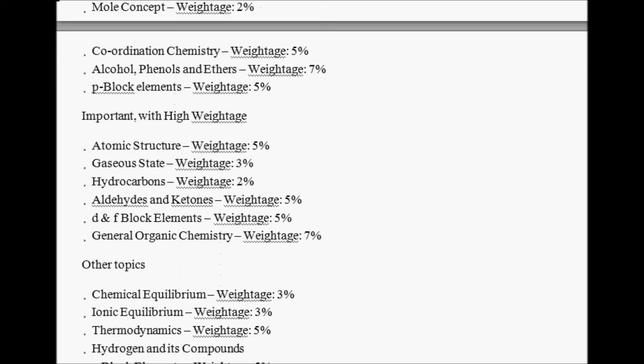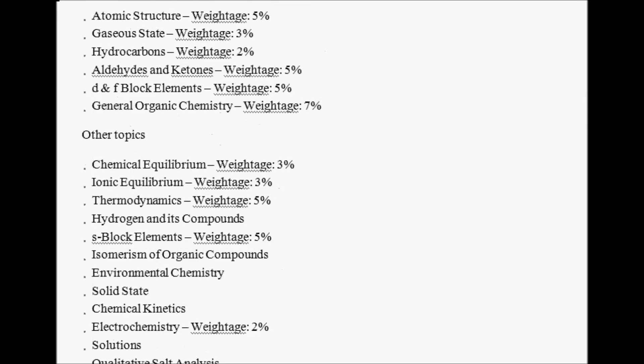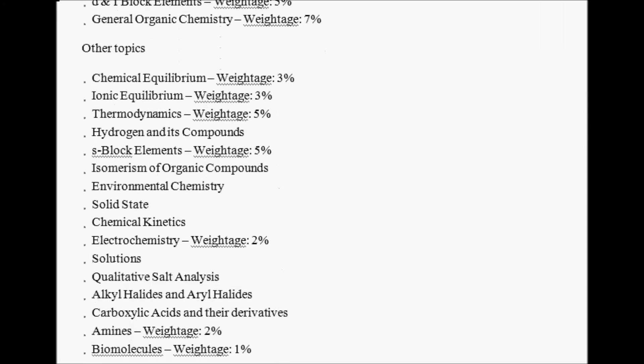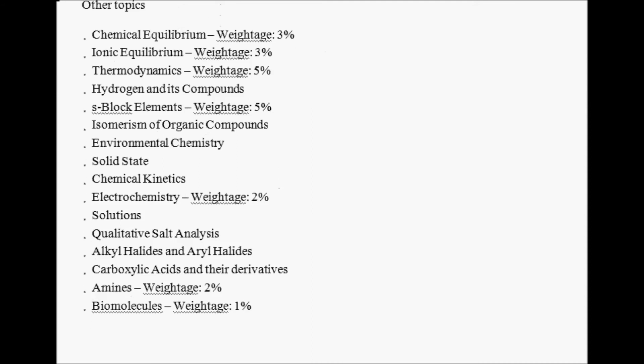Important topics with high weightage: Atomic Structure - 5%. Gaseous State, Hydrocarbons, Aldehydes and Ketones, D and F block Elements - all contain 5%. General Organic Chemistry is very high weightage - 7%. Let's talk about other topics. Equilibrium: Chemical Equilibrium - 3%. Ionic Equilibrium - around 3%. Thermodynamics - 5%. Hydrogen and its Compounds - 7%. S-block Elements - 5%.